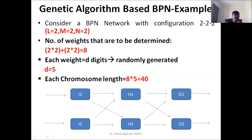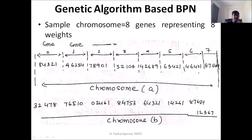This is just the network we have assumed based on 2 inputs, 2 hidden units, and 2 output layers. Let us now take a working example. Genes are numbered 0 to 7 — that is 8 genes, each representing a weight. Each gene consists of randomly generated digits. The entire string of these genes is called a chromosome. We take chromosome A and chromosome B, both randomly generated.